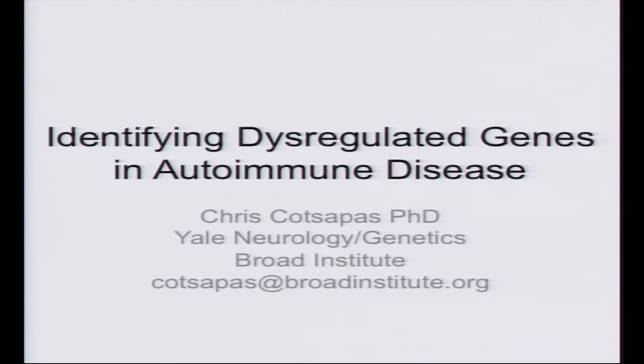I'd like to thank the organizers for giving me the opportunity to come and talk about what we've been thinking about in my lab. What I'm going to talk about is primarily unpublished work — feel free to think about it and share it, but it's very much work in progress, some of it hot off the press, so do take it with a pinch of salt. What we think about a lot in my lab is autoimmune diseases. We want to think about which genes go wrong in disease — not just dysregulated genes, but the causal genes. We're thinking more about causality and pathogenesis than anything else.